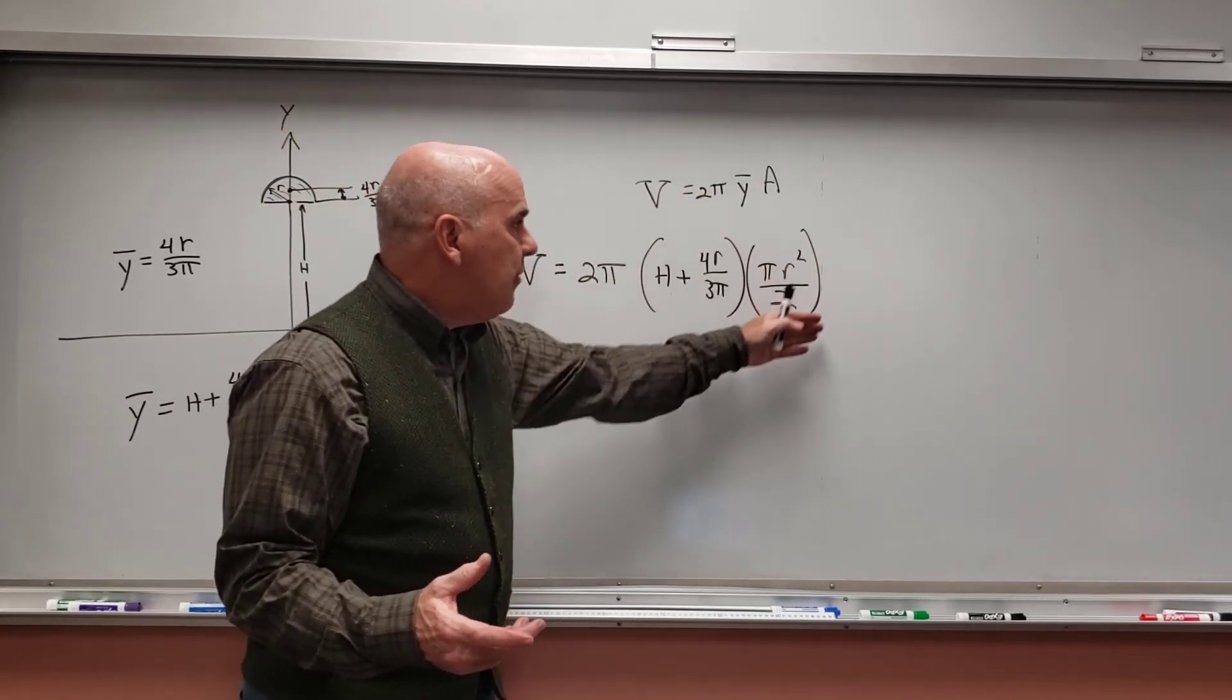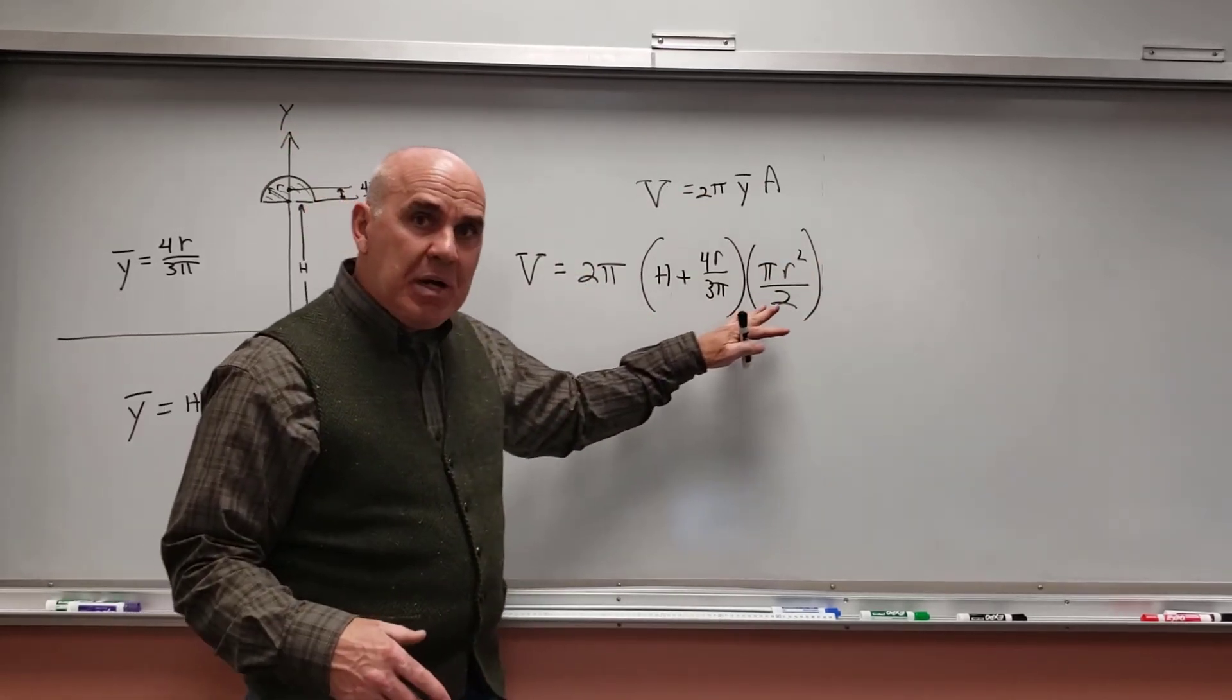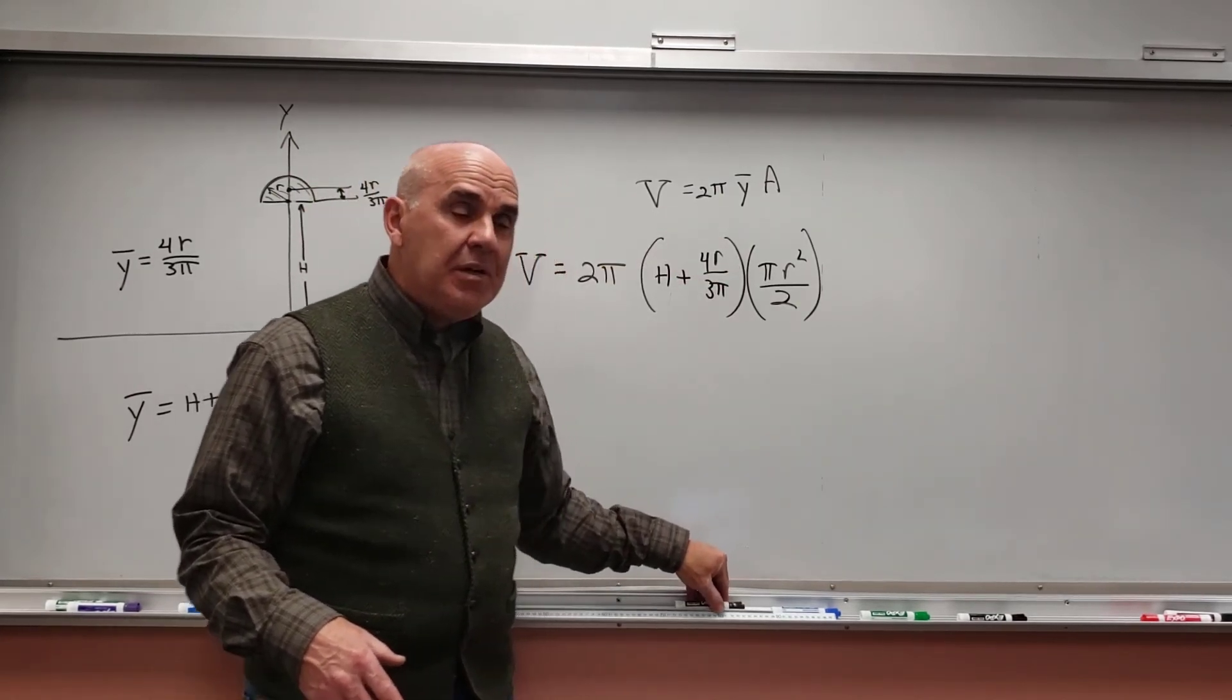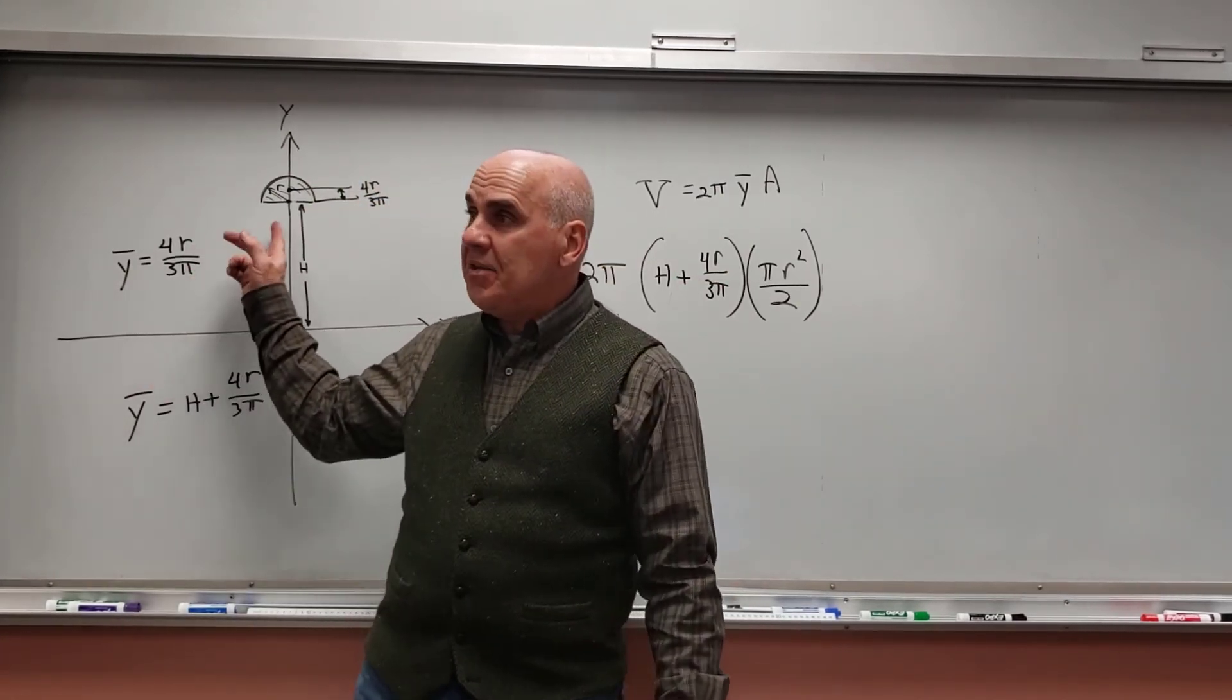Okay, so that would be the volume here. I need to put numbers in. I'm not going to bother doing that. But that would be the volume of that ring created by the semicircle.